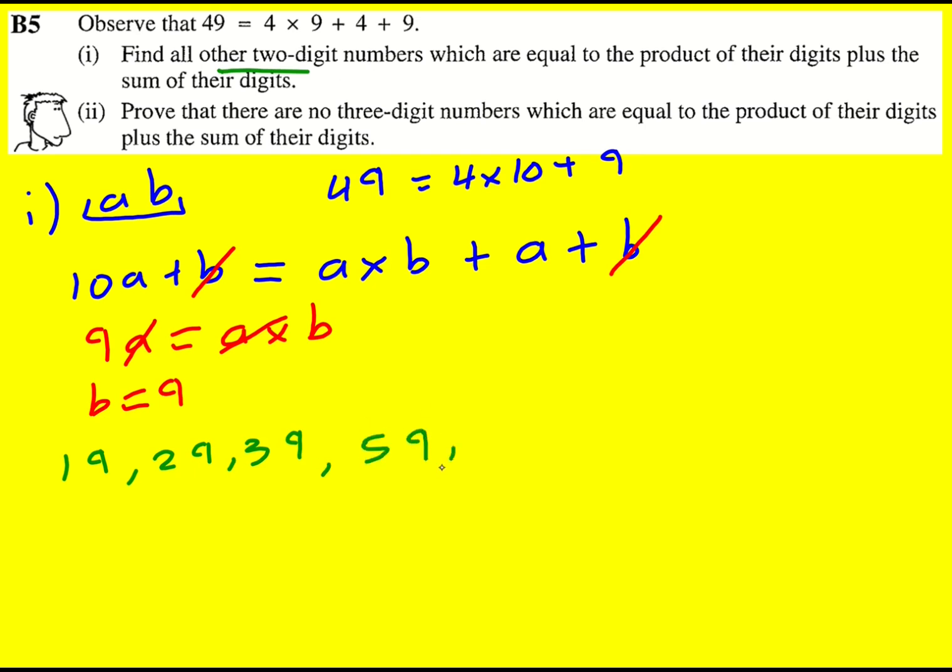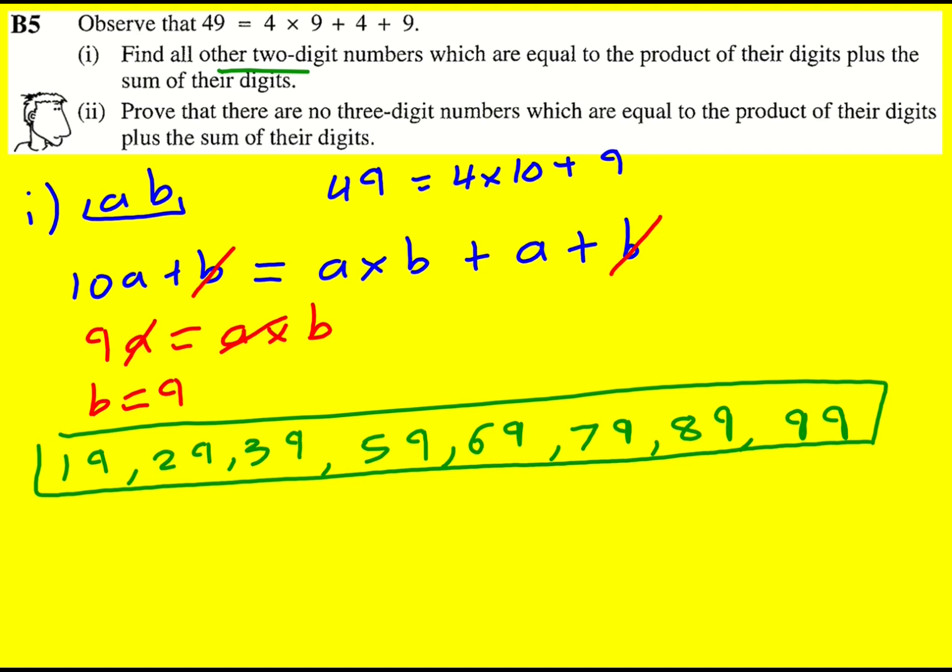So 59, 69, 79, 89, 99. Really nice property that we investigated. These are the numbers that satisfy it. It's going to be these eight plus, of course, the 49 that we started with.